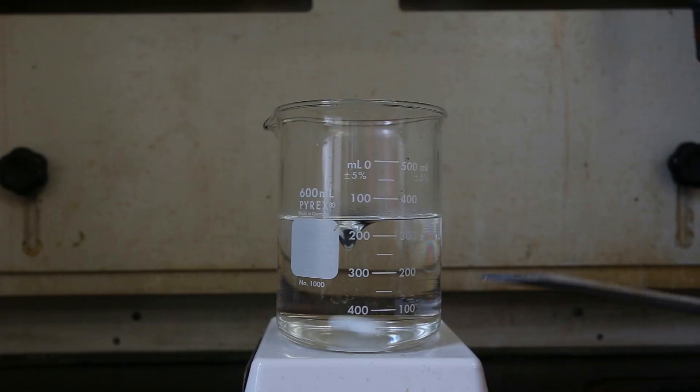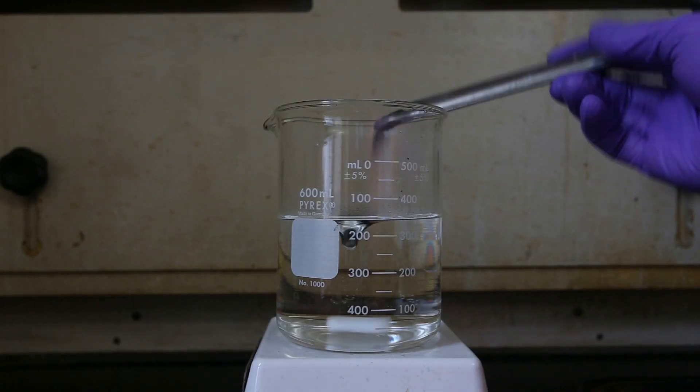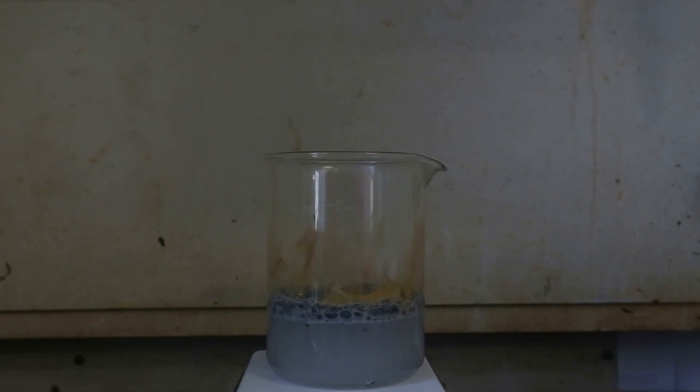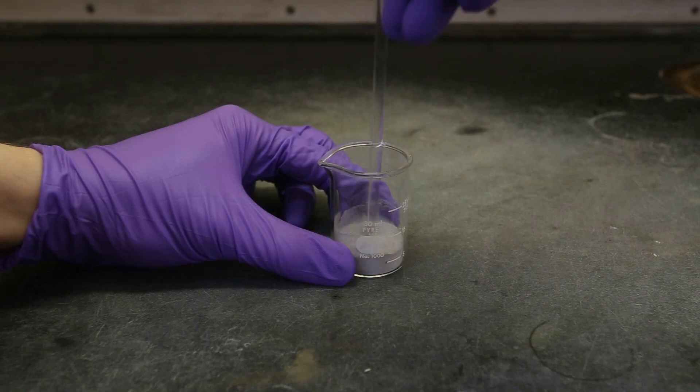When magnesium silicide reacts with hydrochloric acid, it produces a gas called silane. The silane gas bubbles out of solution and once it hits air, it spontaneously combusts.